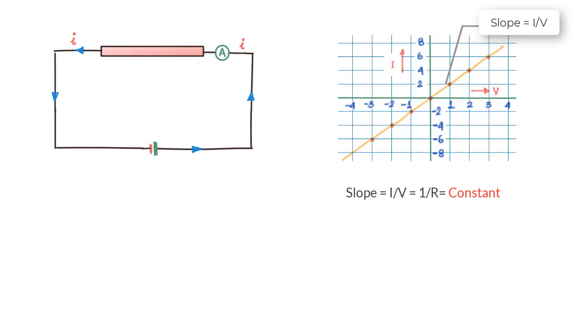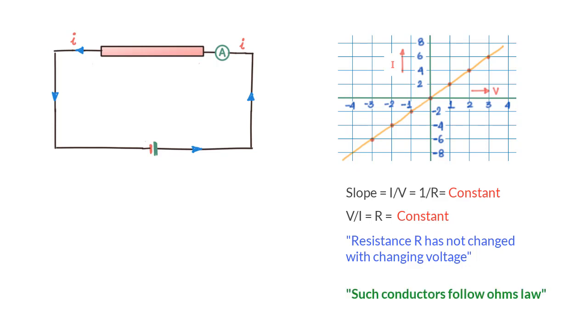If I by V is a constant, V by I will also be a constant. Since V by I is nothing but resistance R, we say that the resistance R has not changed with changing voltage, or R is independent of the applied potential difference, and we say that such conductors follow Ohm's law.